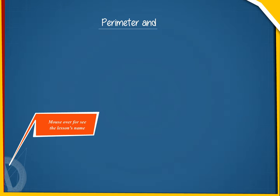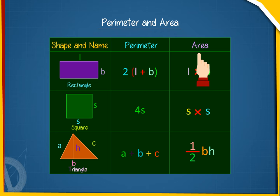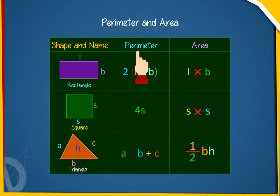Here is a summary of parameters and areas of some geometrical shapes. Shape and name, parameter, area. Rectangle: parameter is 2(L + B), area is L into B.